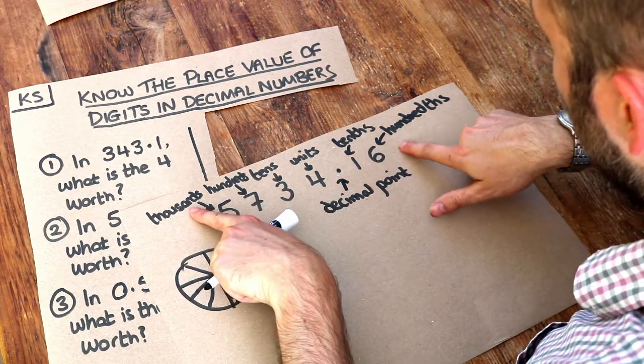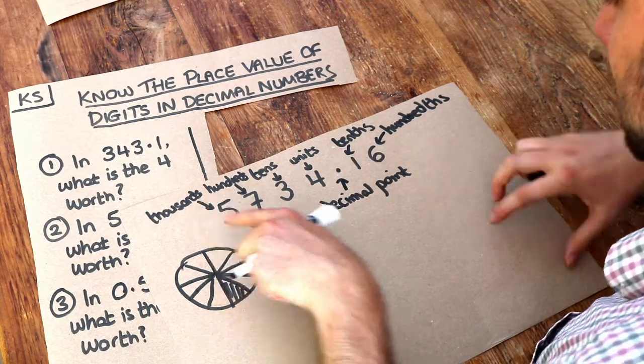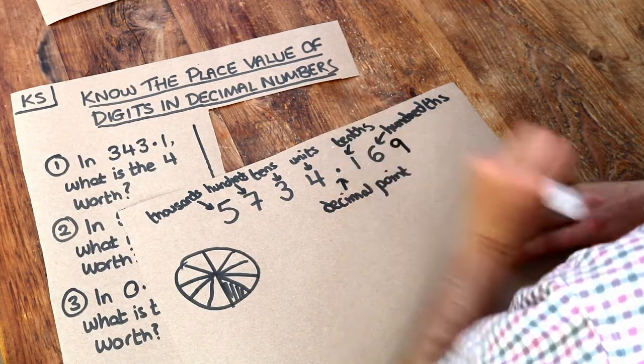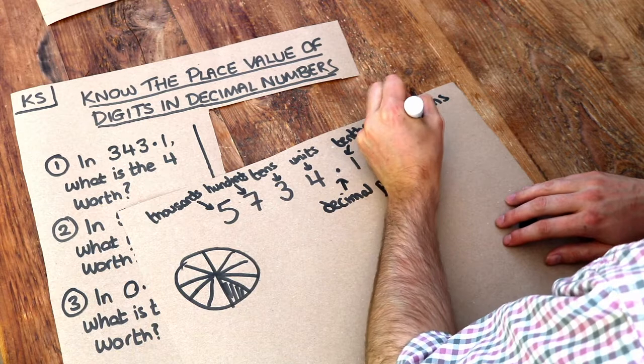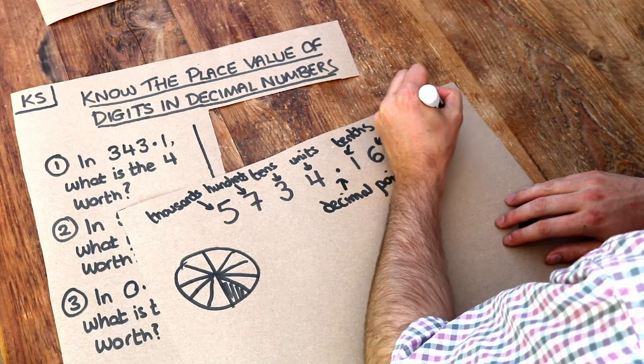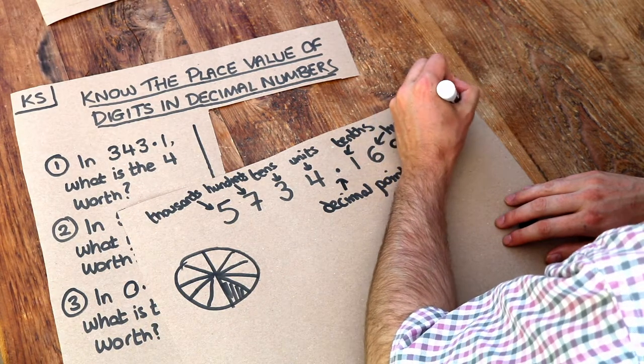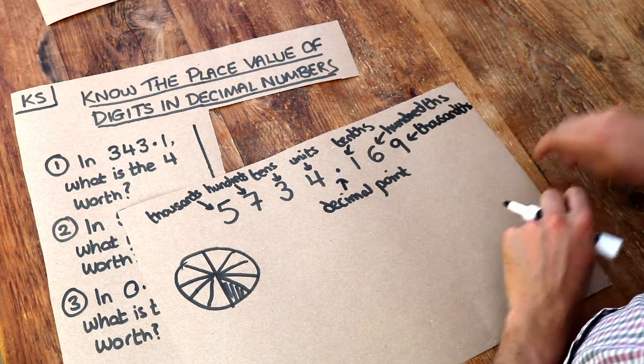So this is thousands. You might think the next one would be the thousandths digit. Let's in fact add that. If we had an extra digit on the end, that would be the thousandths digit, with a TH just before that last S.